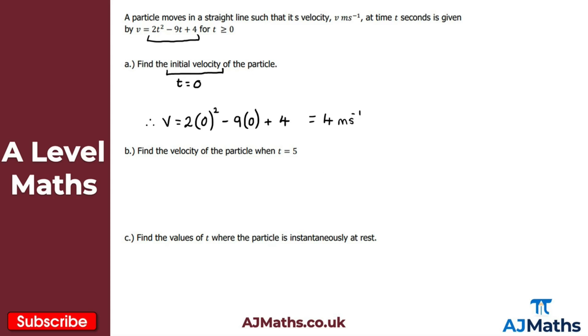Part B: we're asking the velocity of the particle when t is equal to five. Same idea as part A here, but in this case we're just substituting t is equal to five now into our quadratic. So v is going to be equal to two lots of five squared minus nine lots of five plus four.